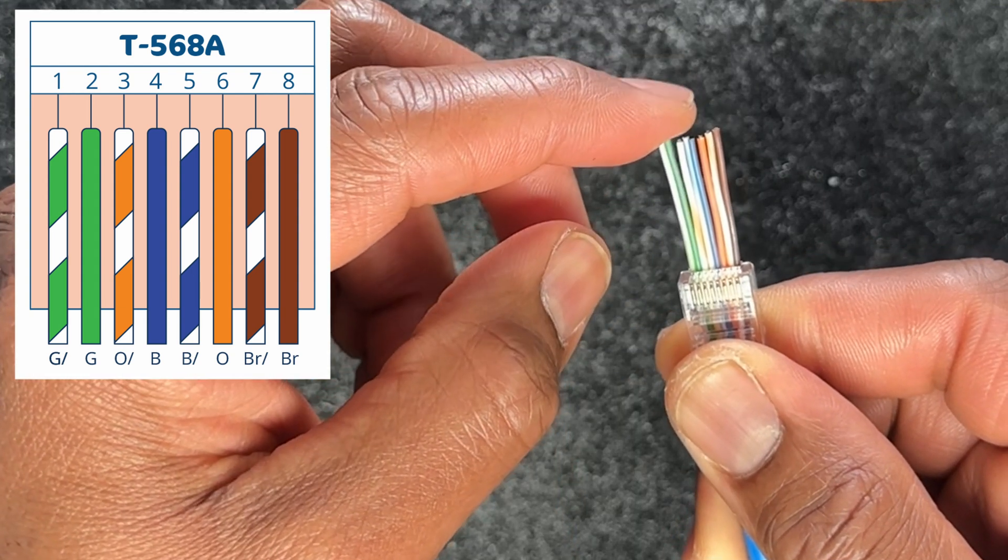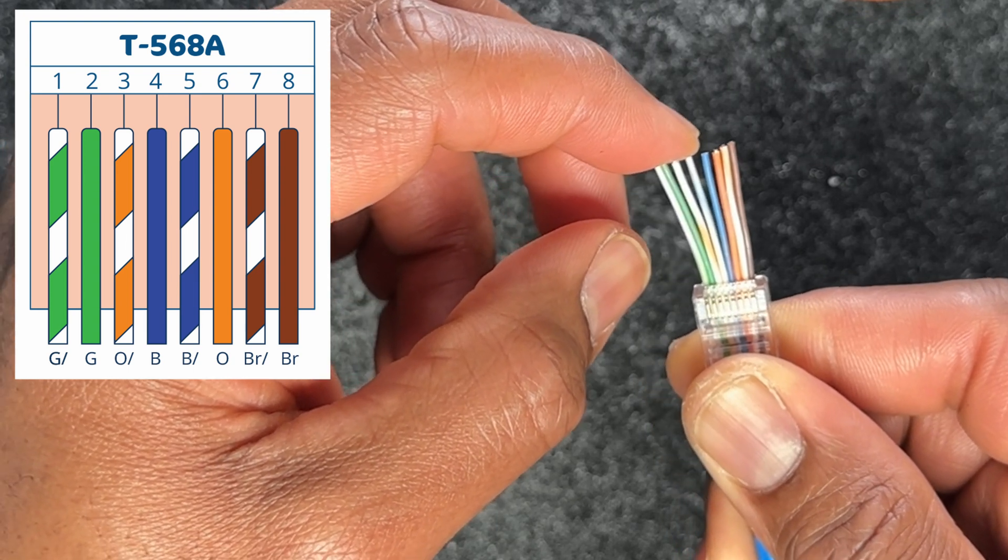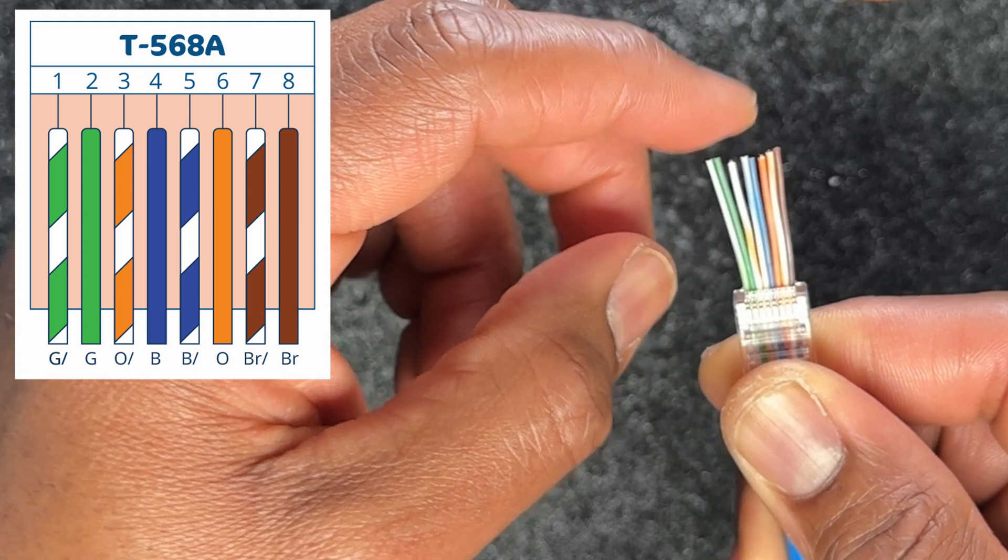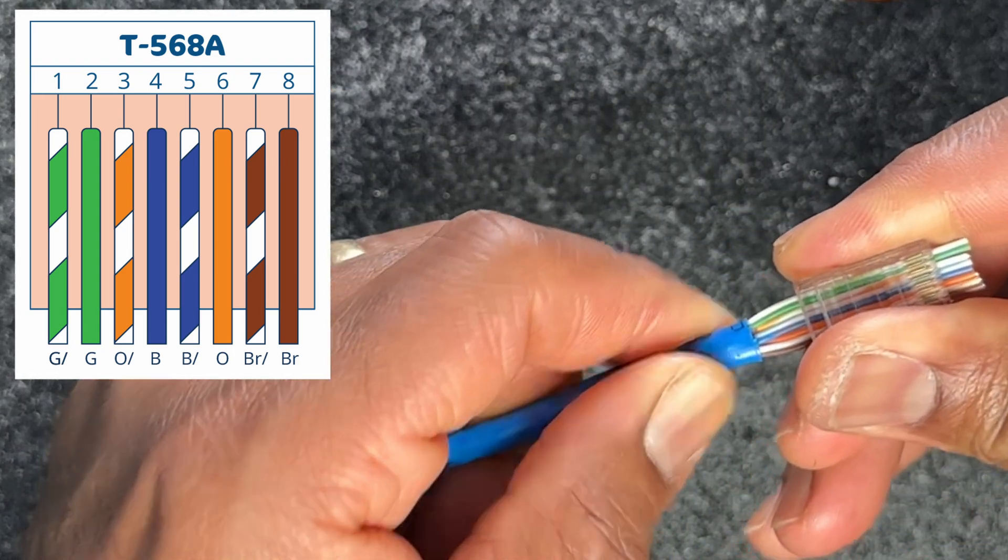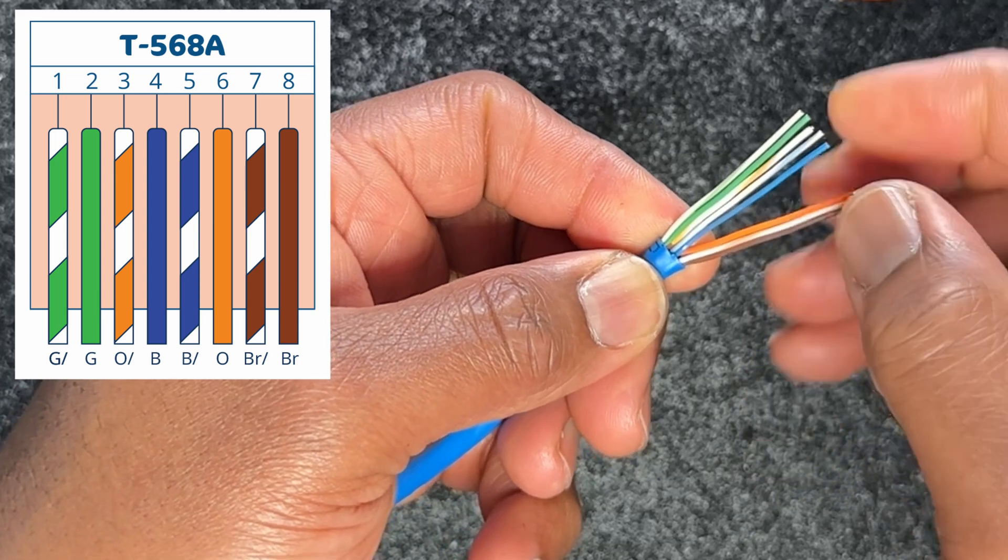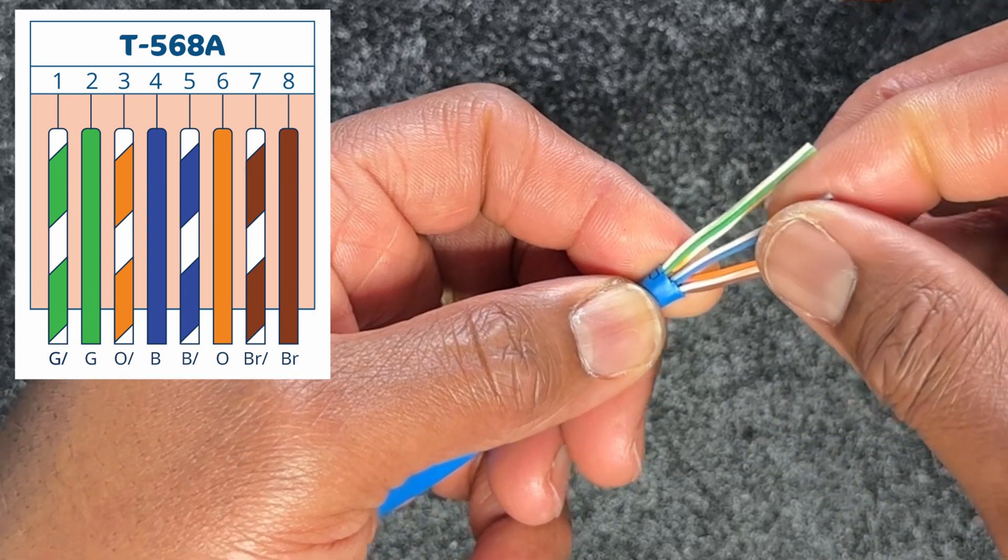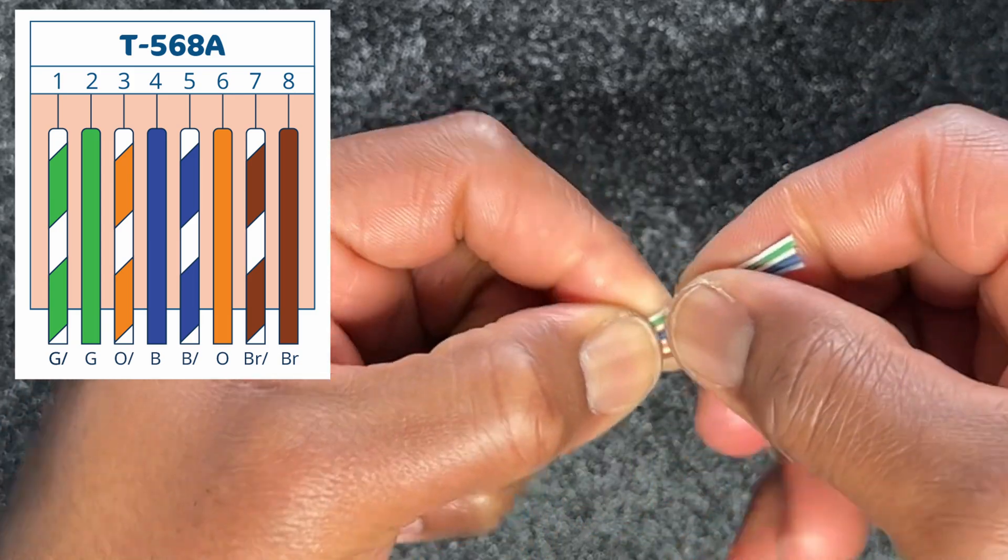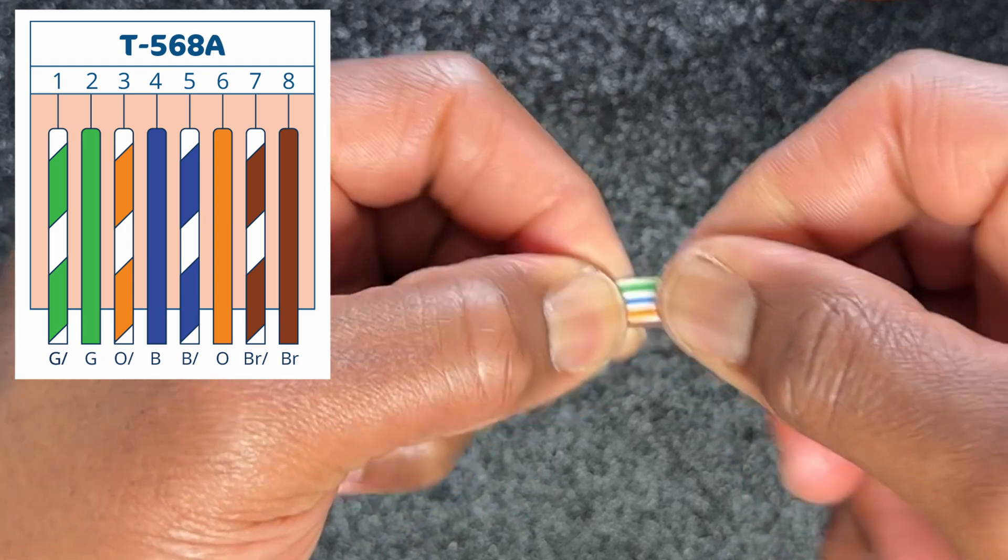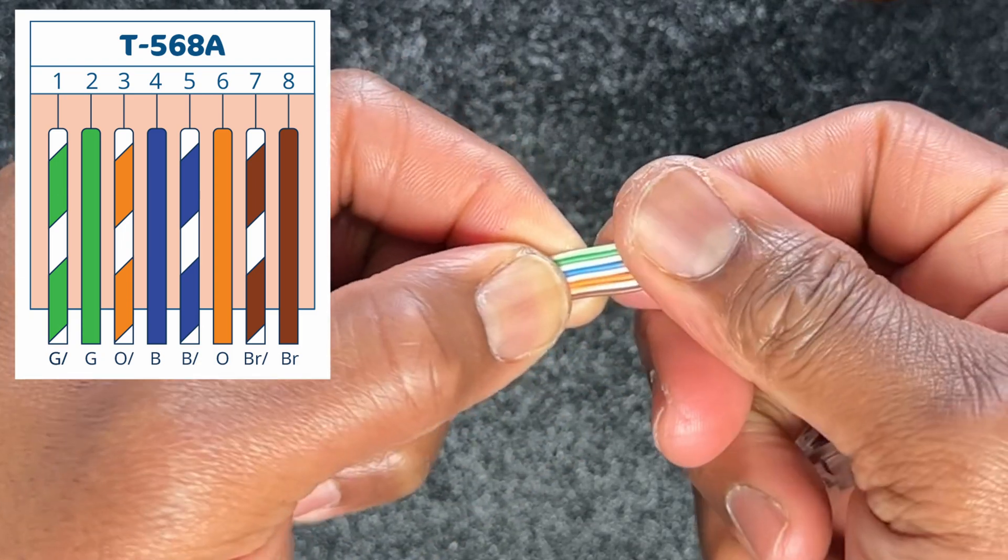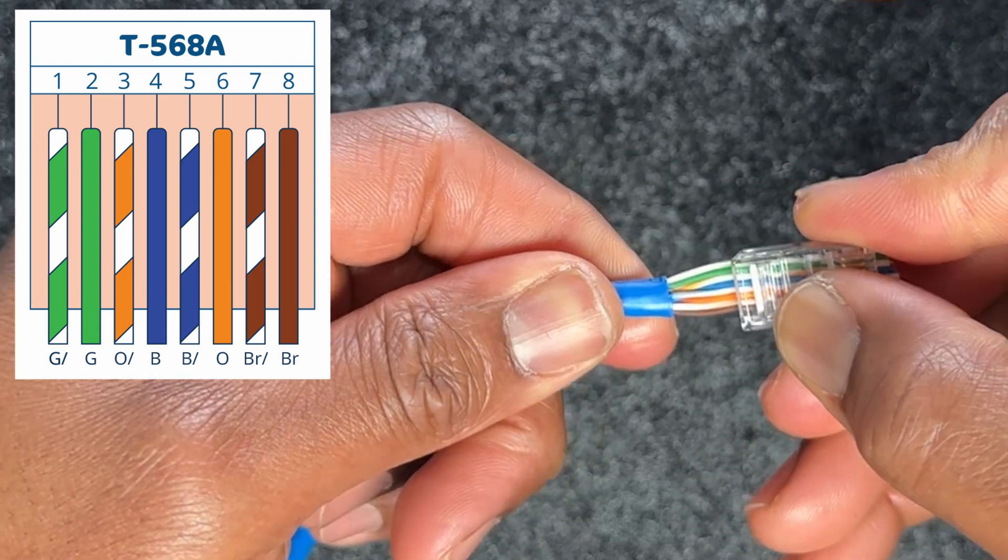Let's take a look. White green, solid green, white orange. It's supposed to be solid blue, but I have white blue. So at this point, just by cross-checking, I can pull it back out and swap the solid blue with the white blue, just like that. I'll re-arrange them again. That was a very important step that you could also always verify. Now that I've re-arranged them, I'll slide them back in.